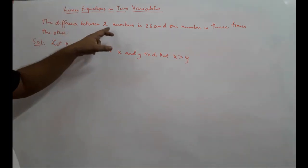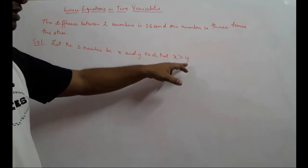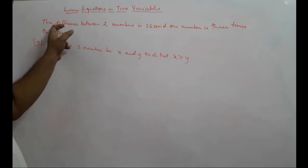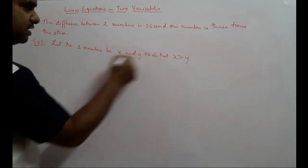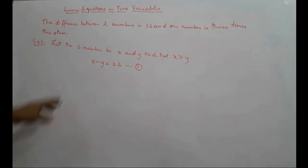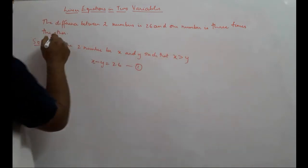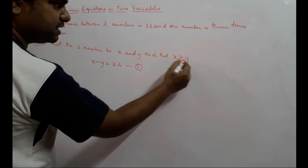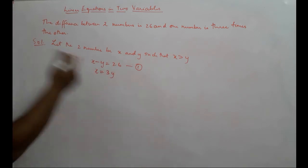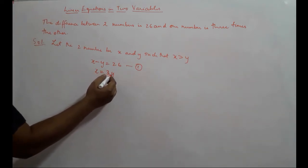We have been given that the difference between two numbers is 26, and one number is obviously greater than the other. So we assume x is greater than y. According to the first part of the problem, the difference between the two numbers is 26, so x minus y equals 26 — this is our first equation. It also says one number is three times the other, so since x is greater than y, we can say x equals three times y.